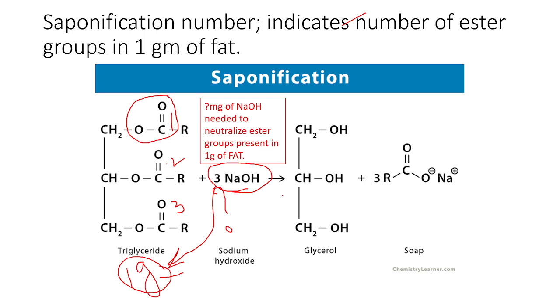The saponification number is mainly applicable for ester-group-containing surfactants, specifically Span and Tween.